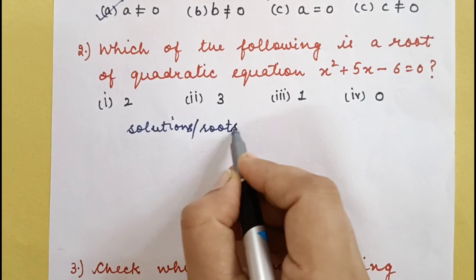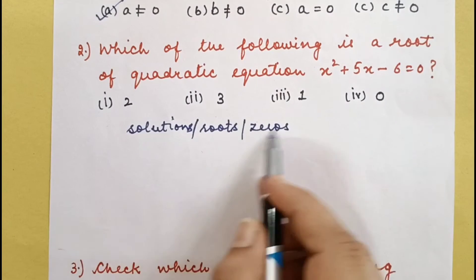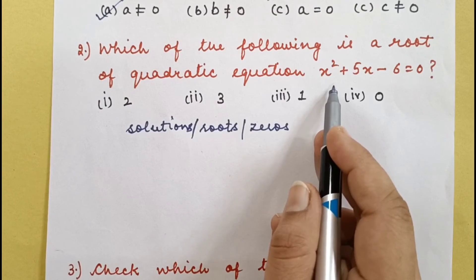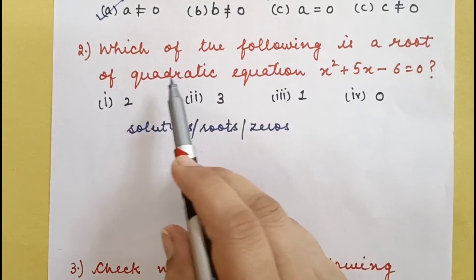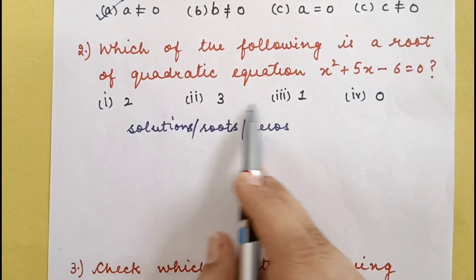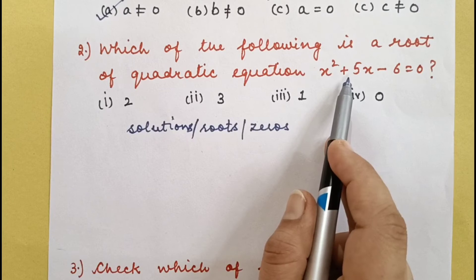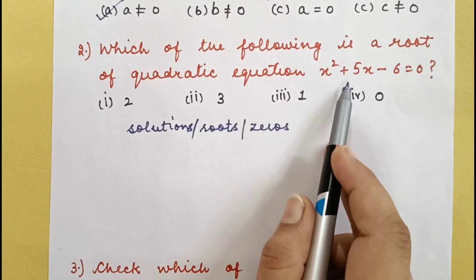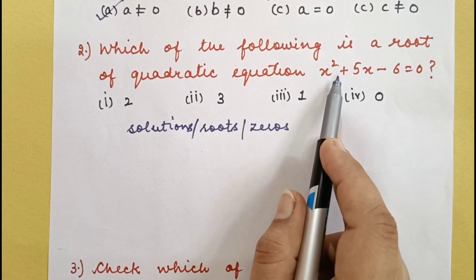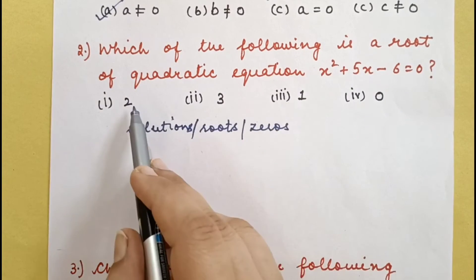Whether you call them solutions, roots, or zeros — it's the same thing. There will be 2 answers for x. Now they have asked: which of the following is the root of the quadratic equation? The root will always satisfy the equation — meaning if you put it in, the left-hand side equals the right-hand side.